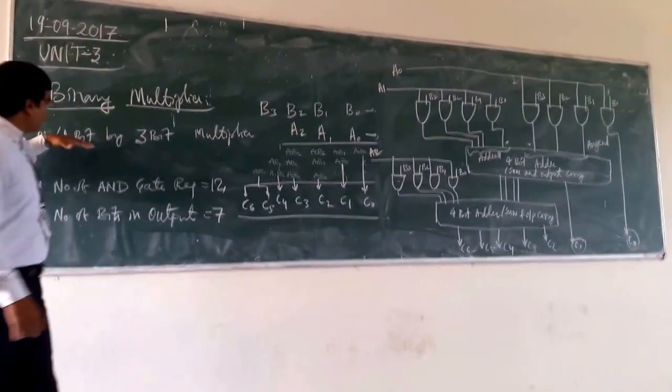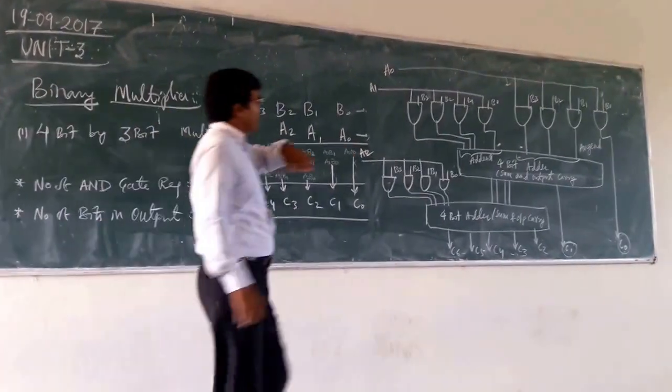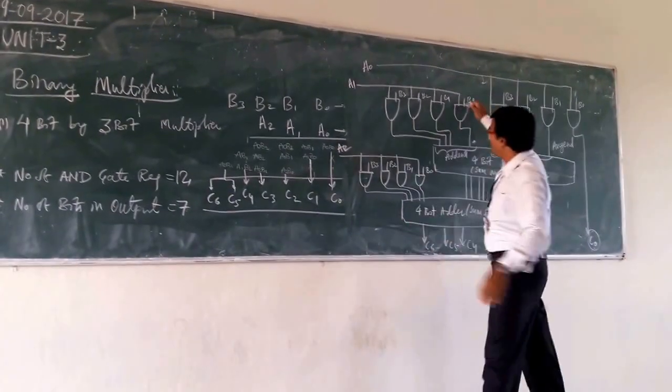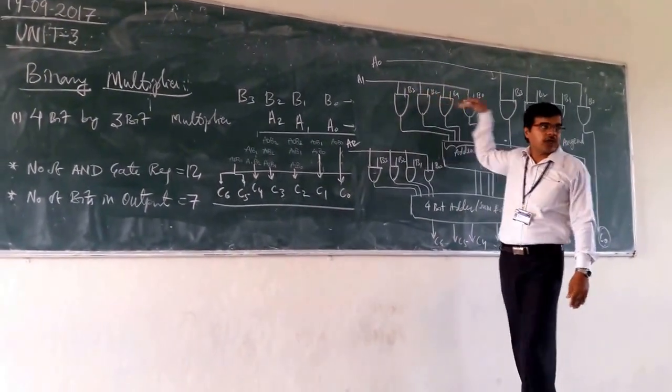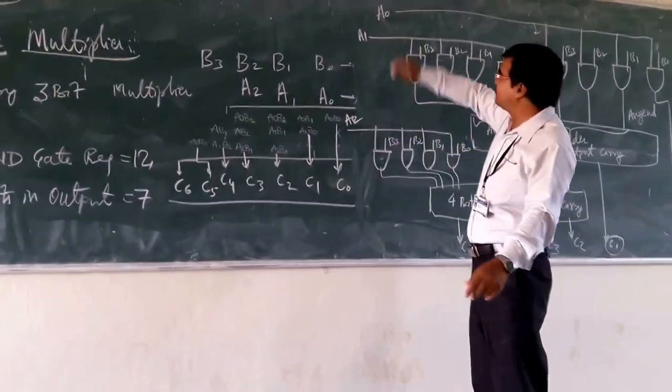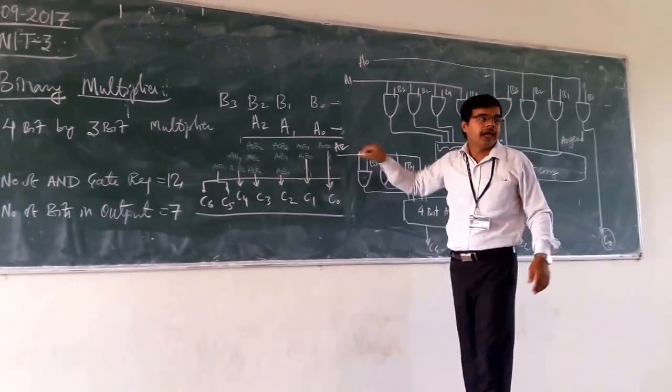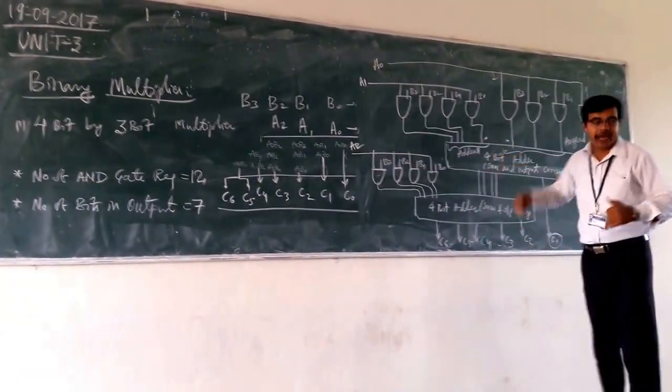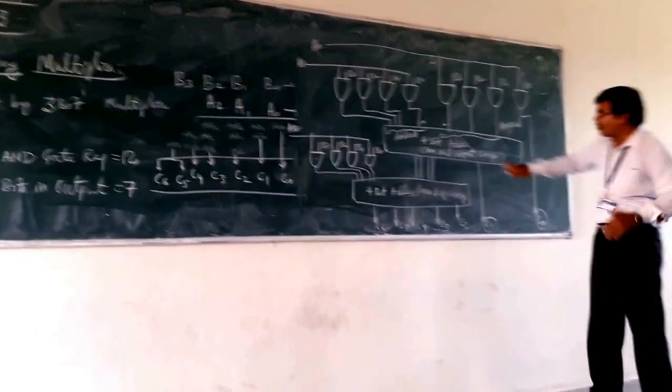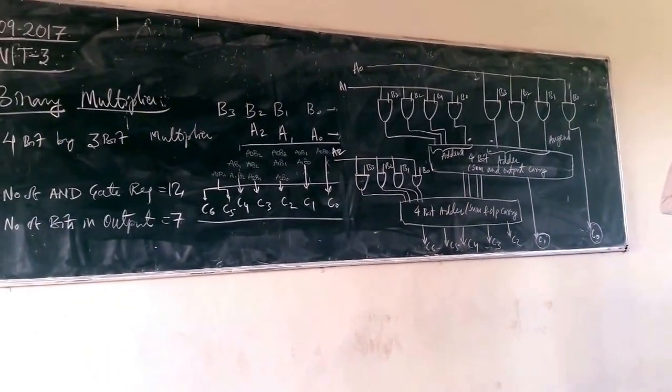As you are having 4-bit by 3-bit, we are having here B0, B1, B2, B3. These are your 4 bits. And for 3 bits, we are having A0, A1 and A2. As it is your 4-bit, we have to go for your 4-bit adder.